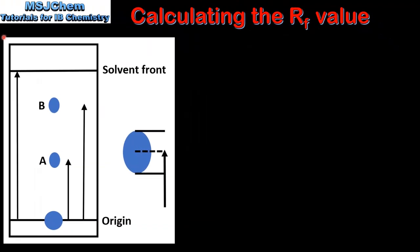Next we look at an example. On the left we have a chromatogram produced in a chromatography experiment. At the origin we have a sample of the mixture to be separated. The mixture then separates into its components — here we have two components, A and B.